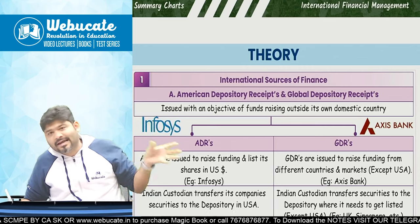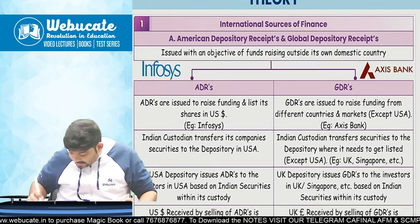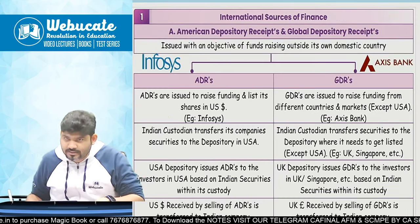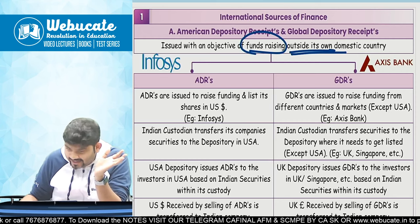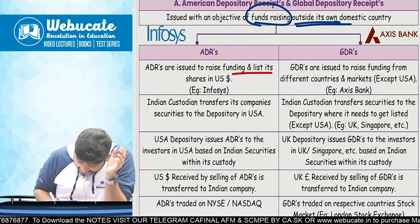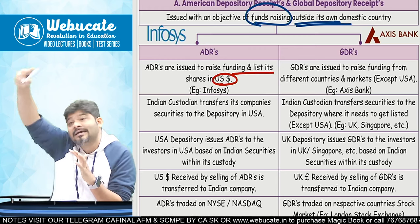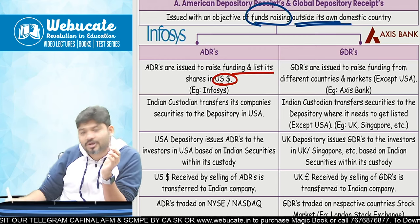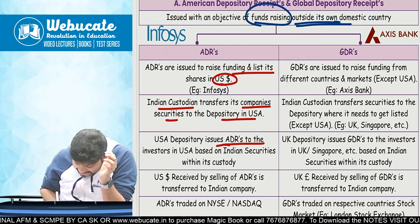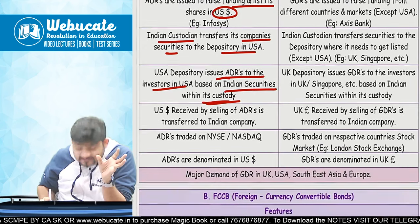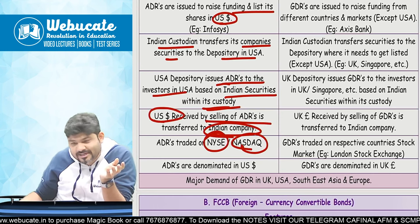Infosys has issued ADR on the New York Stock Exchange. Access Bank has issued a GDR on the Luxembourg Stock Exchange — other than USA, it is a GDR — issued with the objective of fundraising outside the domestic country. ADRs are issued to raise funding and list shares in US dollars. Infosys shares are converted to depository receipts in their particular currency and listed on the New York Stock Exchange. The Indian custodian transfers company securities to the depository in USA.